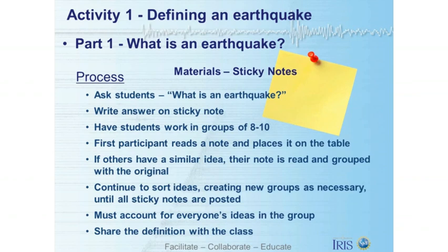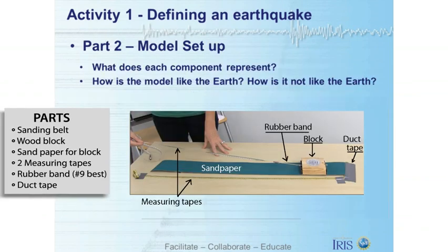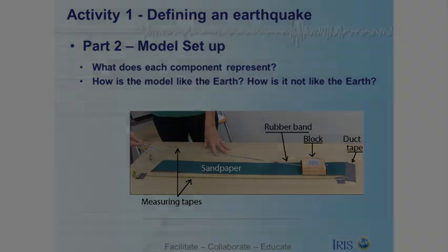Once you've done that, you're ready to hand out the classroom materials and actually set up the earthquake machine. You'll want them to work in groups of two to four — that's usually the best number. While they're setting this up, you're going to want to start talking to them about what each component represents. How is the model like the Earth? How is the model not like the Earth? Why do we use models to study earthquakes in the first place? So now you and I are going to set our models up. Please get out all of your materials and join me in the next video.